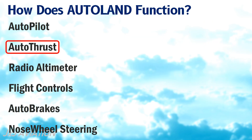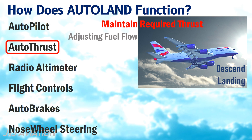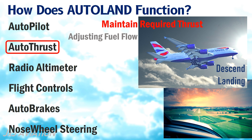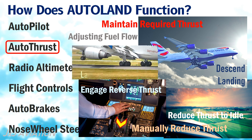The Autothrust is needed to maintain the required thrust by adjusting the fuel flow to the engines during descent and during landing. While descending, the Autothrust will reduce the thrust to idle. But in most aircraft, the pilots are also required to manually reduce the thrust to idle and then engage reverse thrust when the landing gear touches the ground.